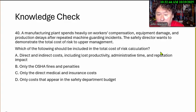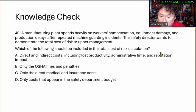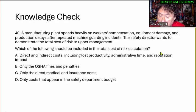A manufacturing plant spends heavily on worker compensation, equipment damage, and production delays after repeated machine guarding incidents. The safety director wants to demonstrate the total cost of risk to upper management. Which should be included in the total cost of risk calculation? A, direct and indirect costs, including lost productivity, administrative time, and reputation impact. B, only the OSHA fines and penalties. C, only the direct medical insurance costs. D, only the costs that appear in the safety department budget.